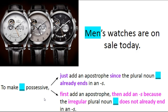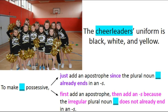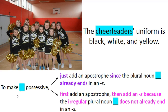So I think we're starting to get the hang of this. Let's try this one: 'The cheerleaders' uniform is black, white, and yellow.' Lots of cheerleaders — not just one. Cheerleaders — is it regular or irregular? Cheerleaders is a regular plural noun. It's just the singular noun 'cheerleader' plus an s. It's a regular plural noun, so to make 'cheerleaders' possessive, just add an apostrophe since the plural noun 'cheerleaders' already ends in an s.